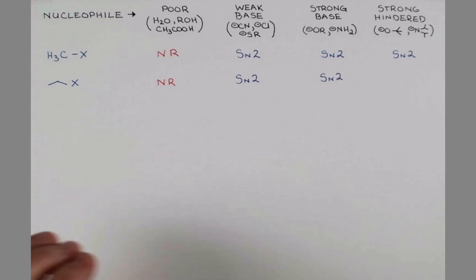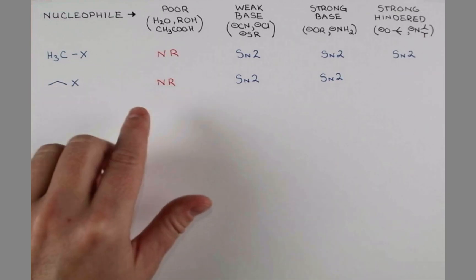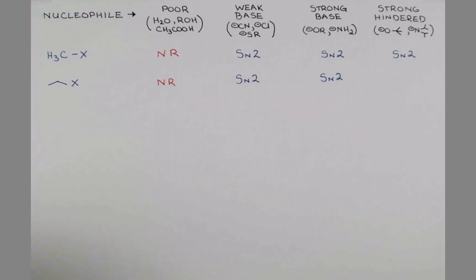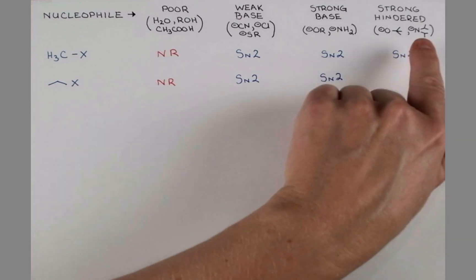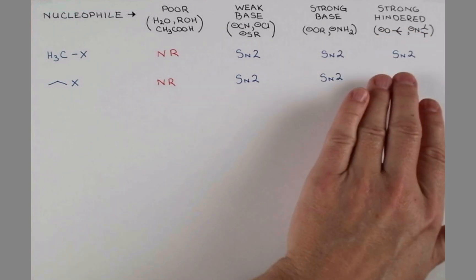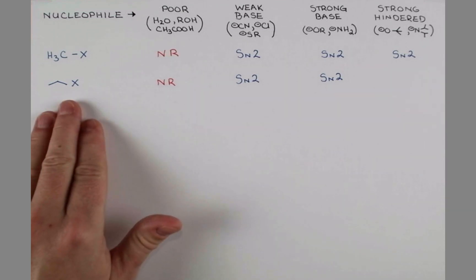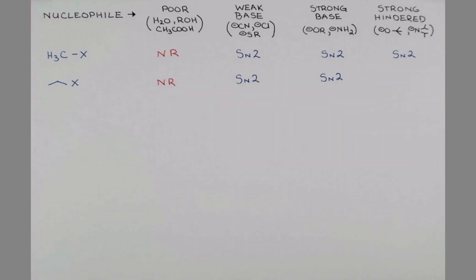It's only when we use a strong hindered base that attack right here in an SN2 fashion is not as possible. We're going to have steric hindrance from the bulkiness of the base, and so when we treat this substrate with a strong hindered base, we get elimination. Again, primary carbocations are not stable, so this elimination will be an E2 mechanism.